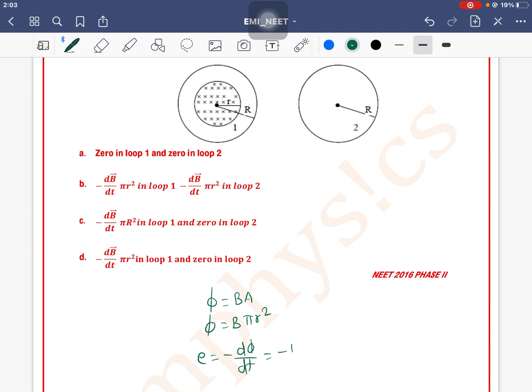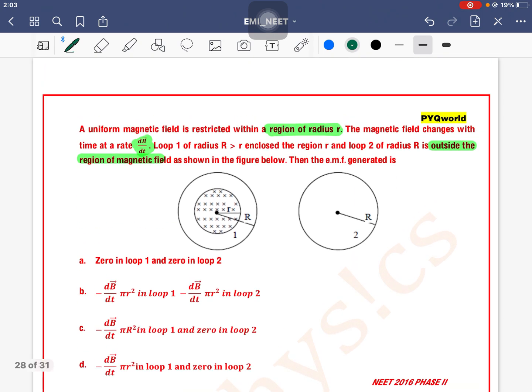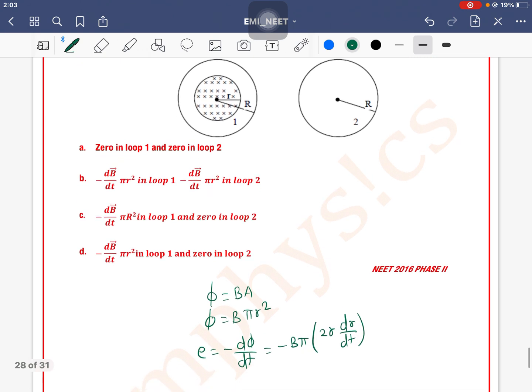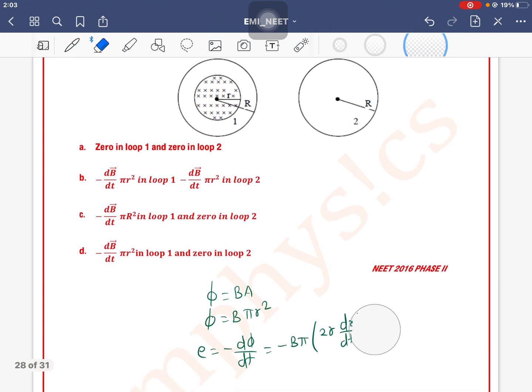Now here, B is constant, π is constant, derivative of... wait, let me correct my mistake. Here Φ equals B into π r². B is changing, not r.